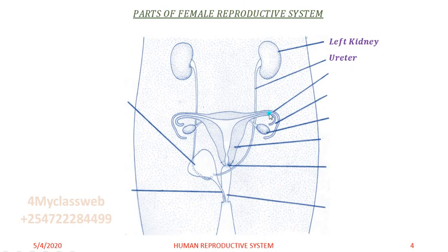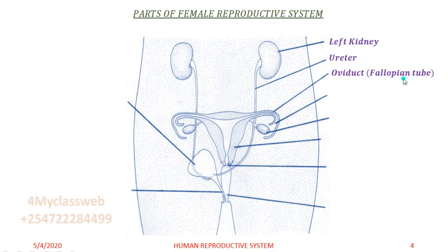From there, we have this part here that is called the oviduct, also known as the fallopian tube. This is a very important part of the female reproductive system.